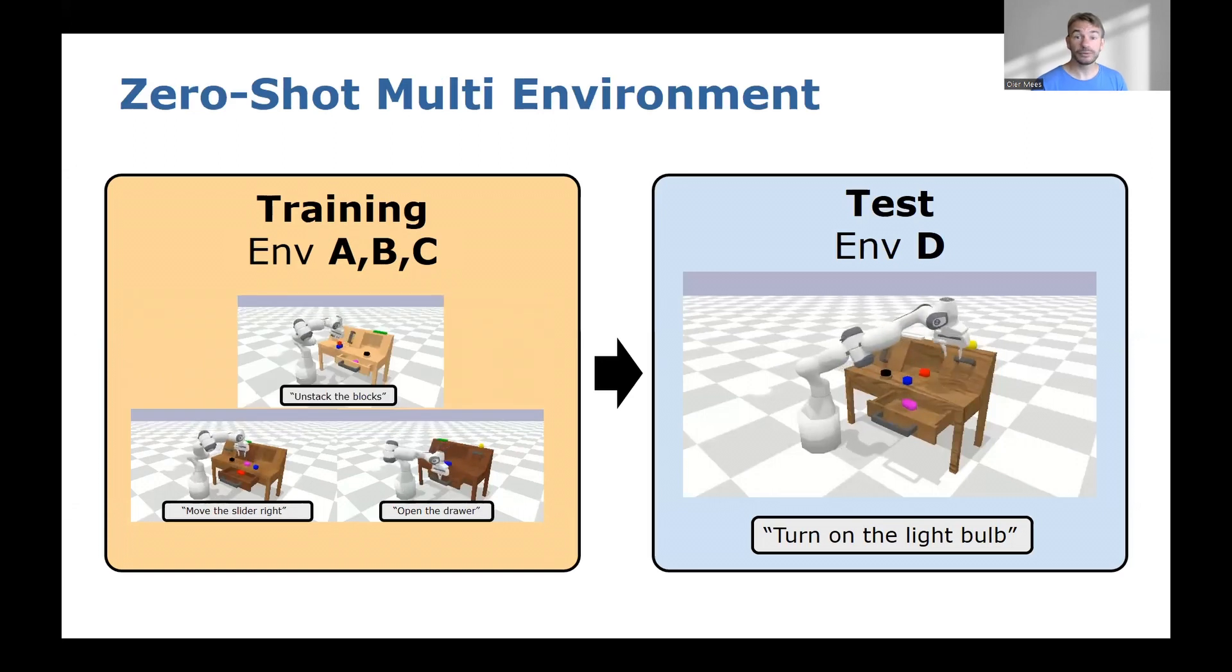To open the door for future development of agents that can generalize abstract concepts to unseen entities the same way humans do, we include a challenging zero-shot evaluation by training in three environments and evaluating the policy in the fourth unseen one. This is the hardest combination since the policy has never seen the test environment during training. However, all elements of the scene were present in different locations in the training environments and with different textures obviously.